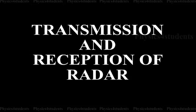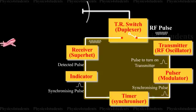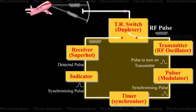Now we need to know how transmission and reception takes place in a radar. The block diagram of a simple radar system is shown. This block diagram indicates that the radar system consists of both the transmitting and receiving system.